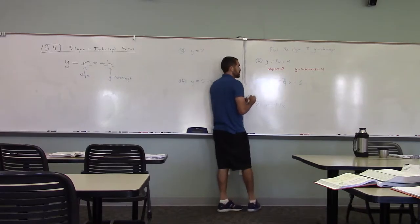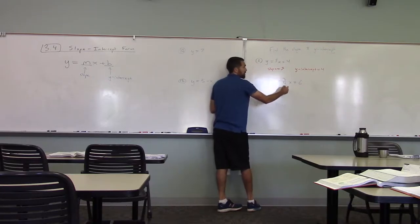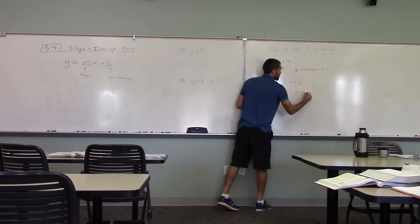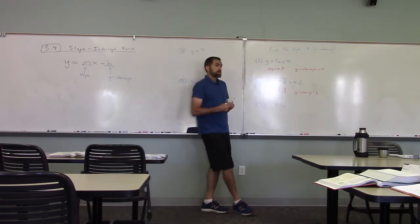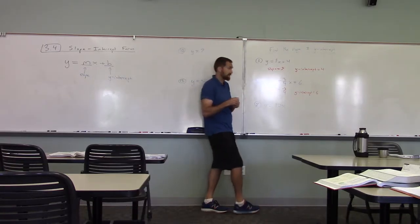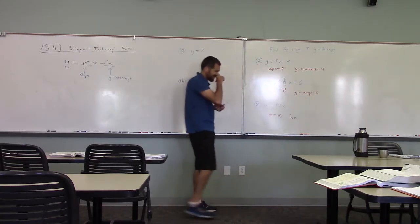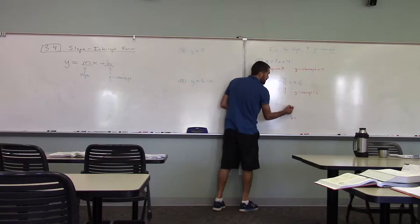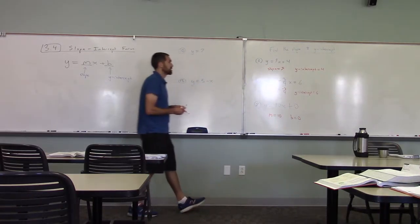What's the slope of the second one? Minus three fourths. So, slope is negative three fourths. Doesn't matter where the negative sign goes as long as there's only one of them. And the y-intercept is six. Next one, a little trickier. Slope is ten. m is ten. And b is zero. Because we have plus what number? Zero. We're adding zero on. So, the y-intercept is zero.